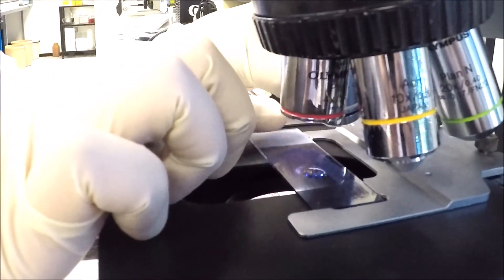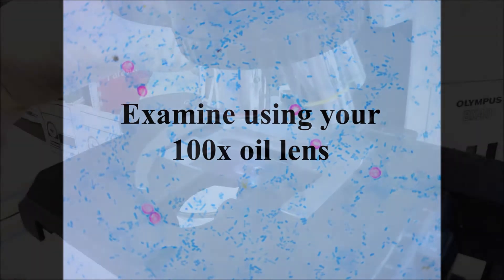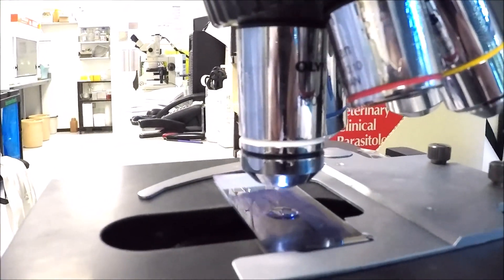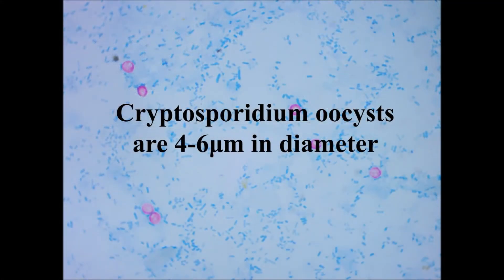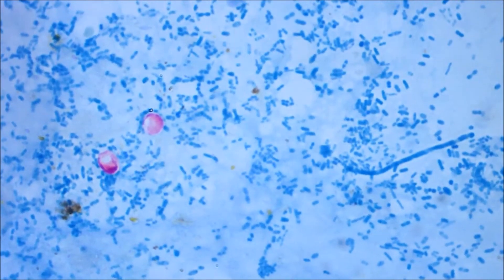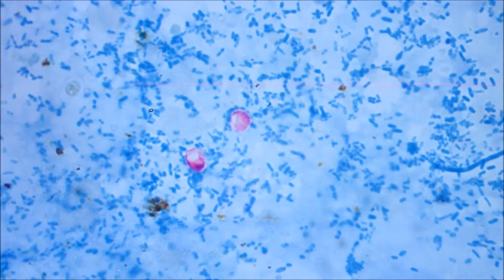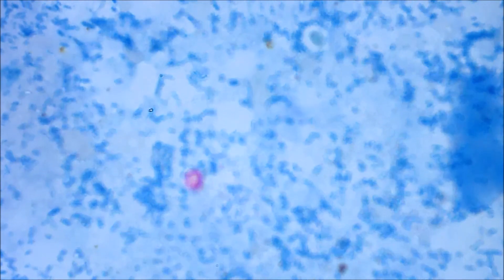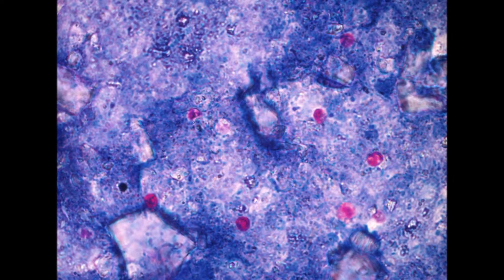Under your microscope, use your 100x oil lens for analysis. Cryptosporidium oocysts are 4 to 6 micrometres in diameter. They may vary from light to dark pink or purple in colour. Oocysts contain 4 sporozoites but may be difficult or almost impossible to see due to variation in staining.